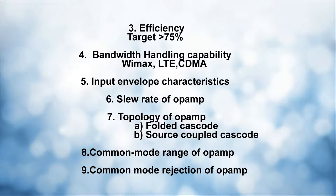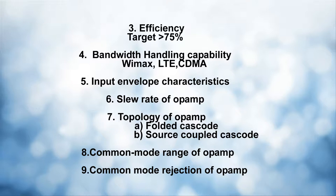The topology of the op-amp is also a consideration — options include folded cascode, source-coupled cascode, and many other flavors. This design is hard to get right as it falls more into analog design. The op-amp must be very linear with very high bandwidth, good slew rate, good common mode range, good common mode rejection ratio, and of course very low power consumption.